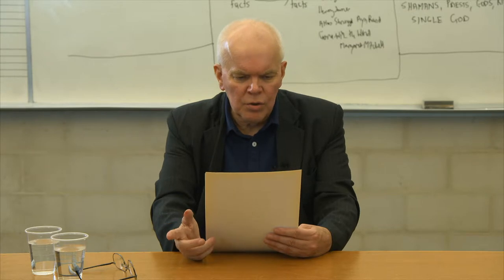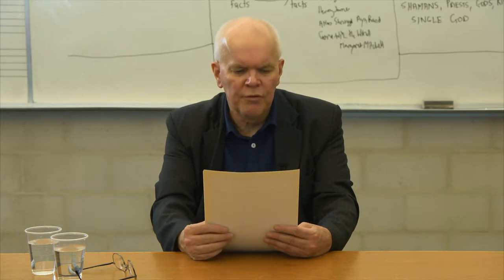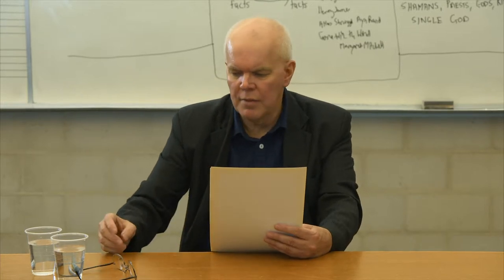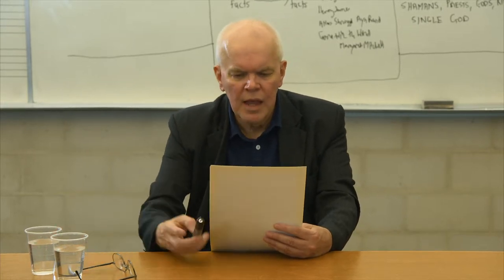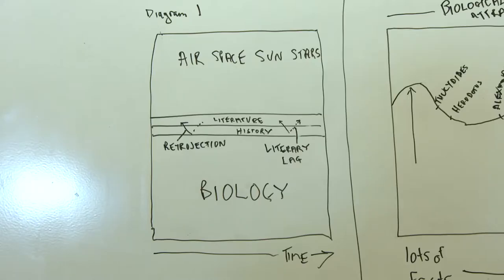This is the final talk in a series on biology and literature. As is appropriate for a final talk, it's time to state what has been learnt from our investigations, and this can be done with a summarising theory. Luckily this can be presented in just a couple of minutes. Two diagrams will come in handy for the presentation of the theory.